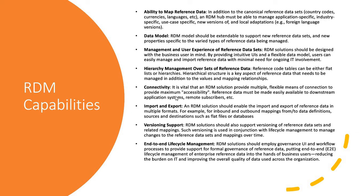The fifth capability is connectivity. Your RDM solution should have a way to share the data being managed in RDM to all consuming systems that hold those reference codes. There are different ways to do this — you can push data in real-time or systems can pull via APIs to refresh reference data within their own systems. The RDM solution should have the capability to expose data for different systems to consume it.